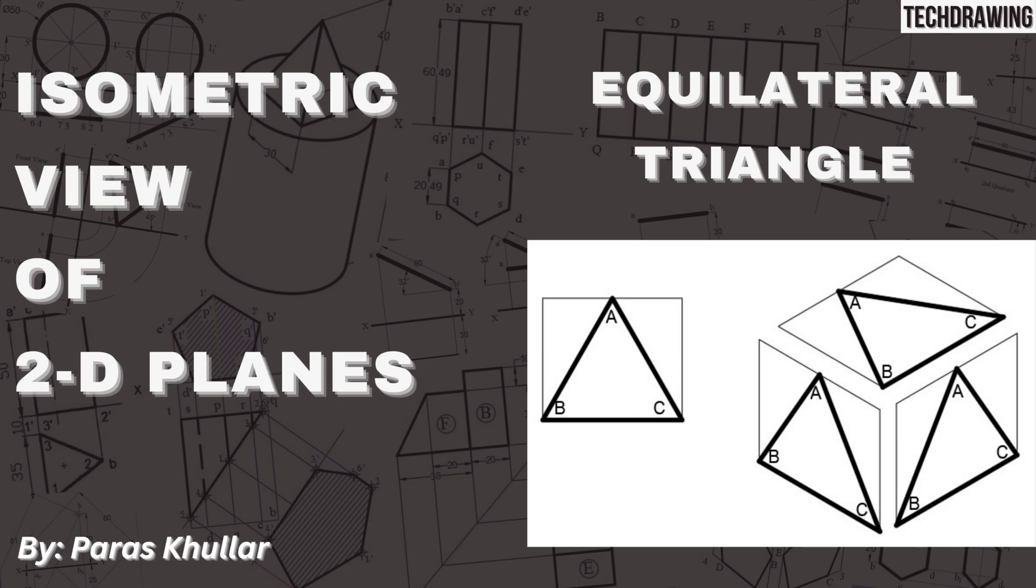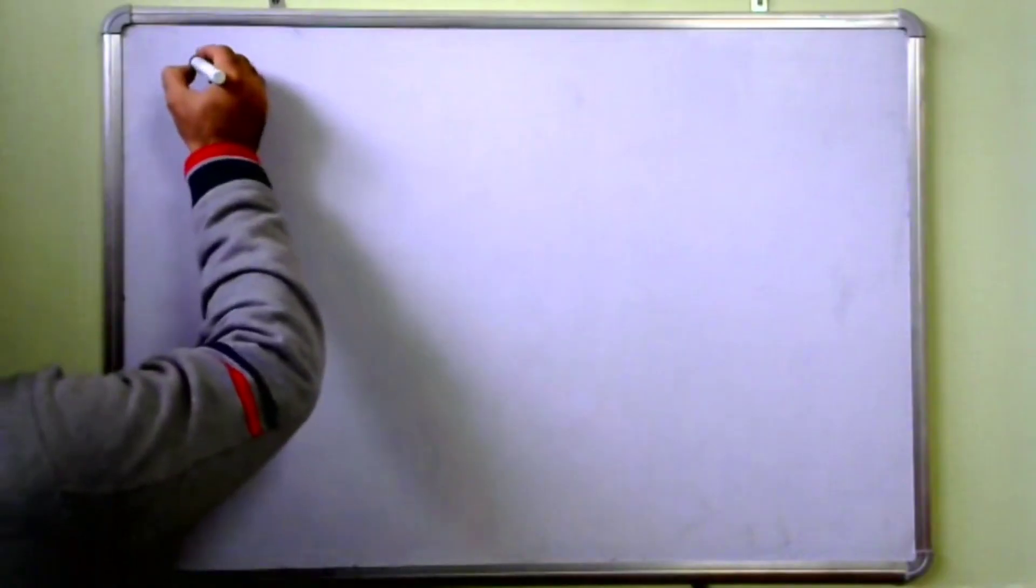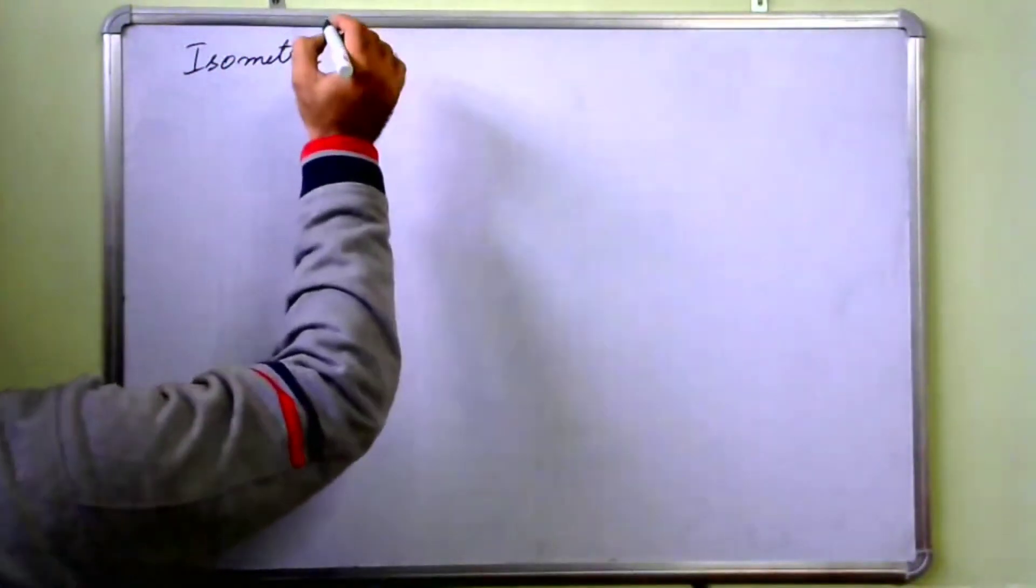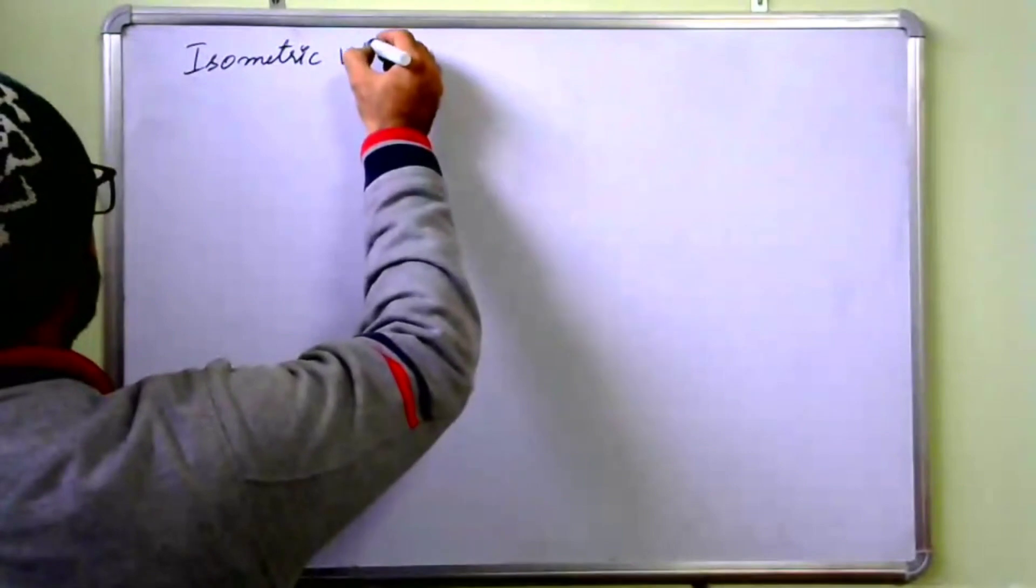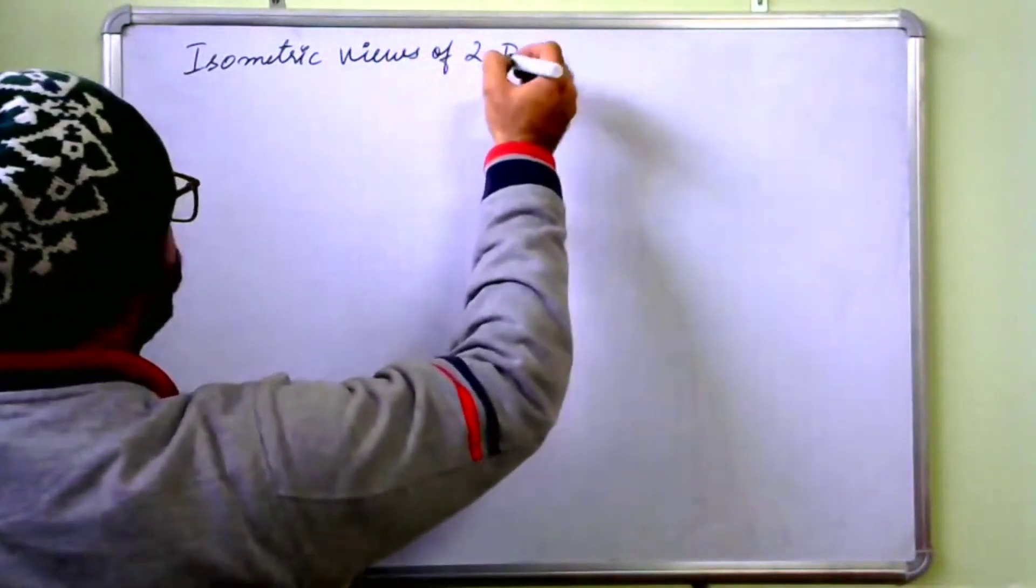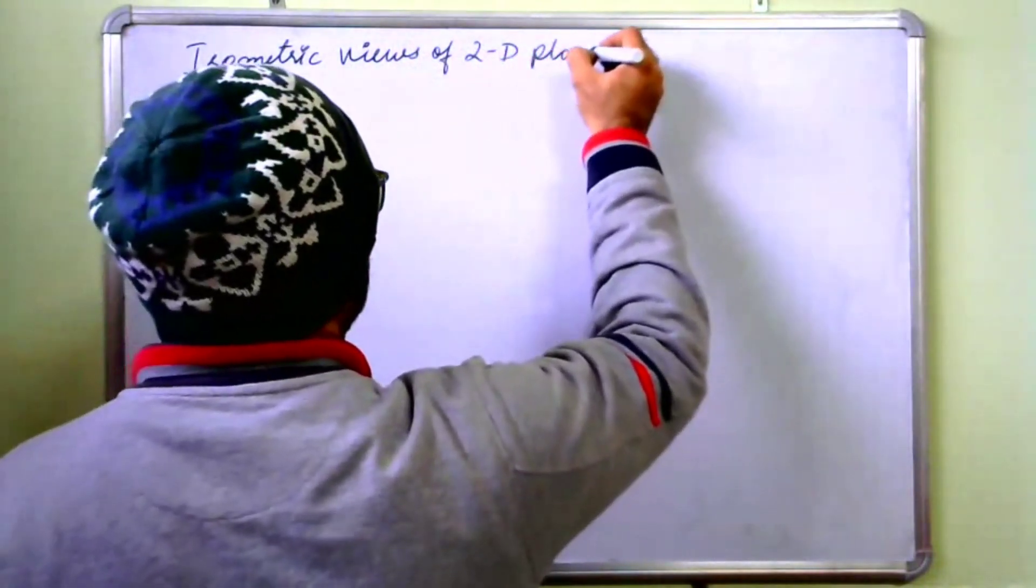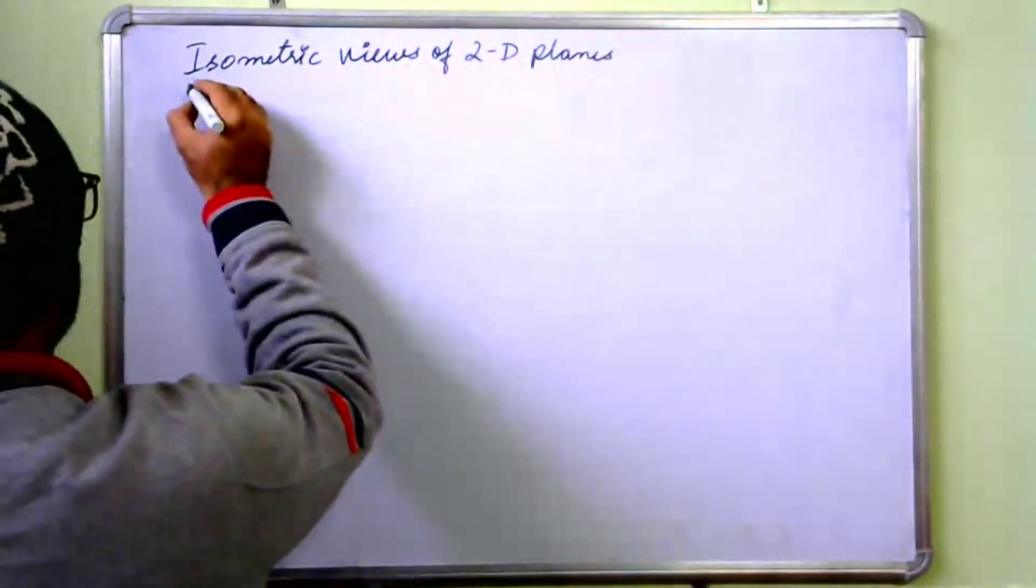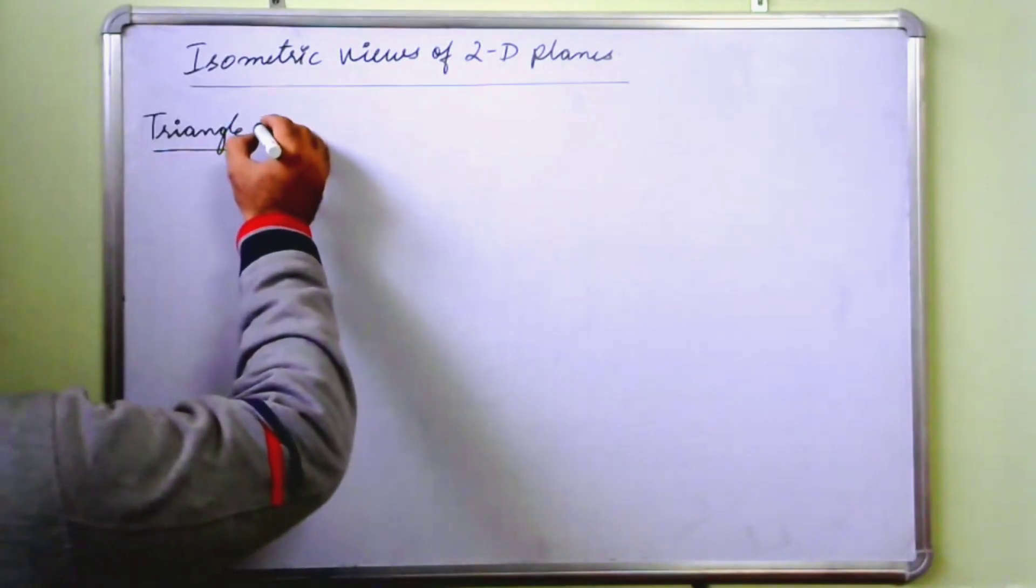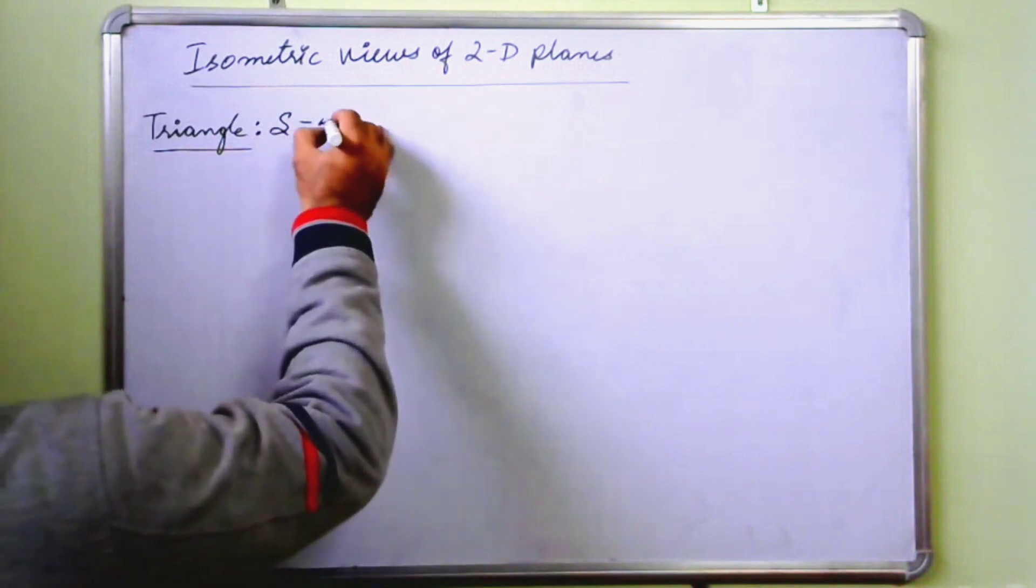Hello students, in this video we will learn how to draw the isometric view of an equilateral triangle. Isometric views of 2D planes. Triangle, let us say side is equal to 50mm.